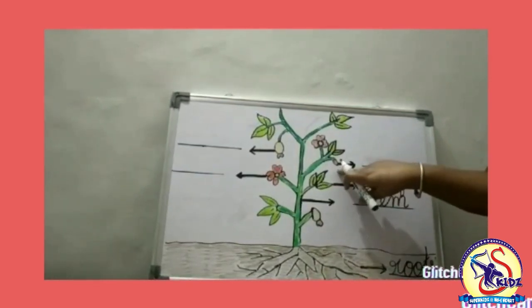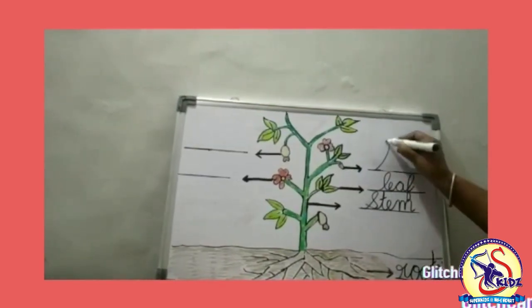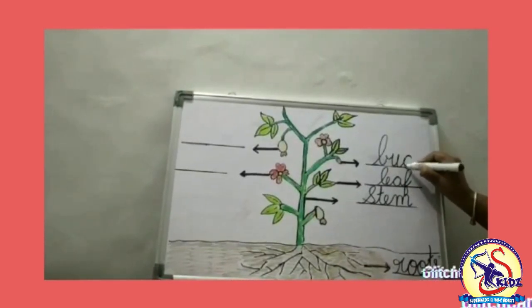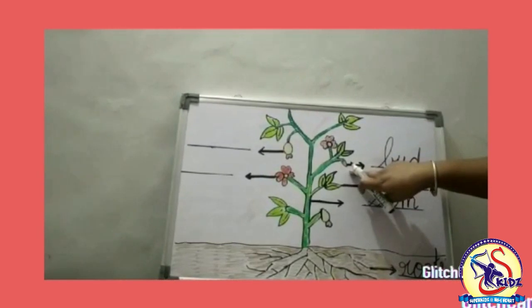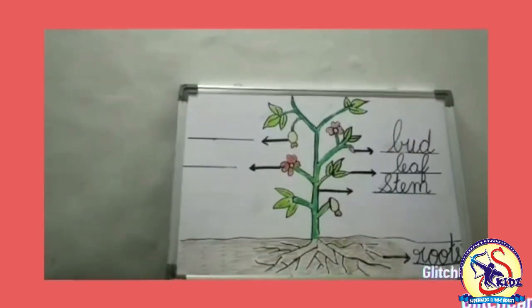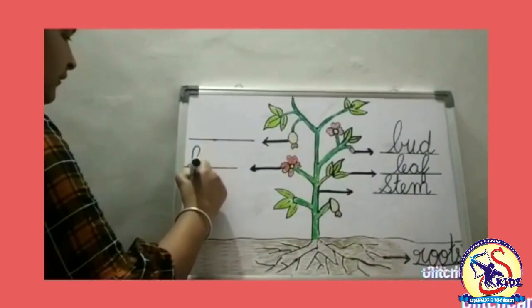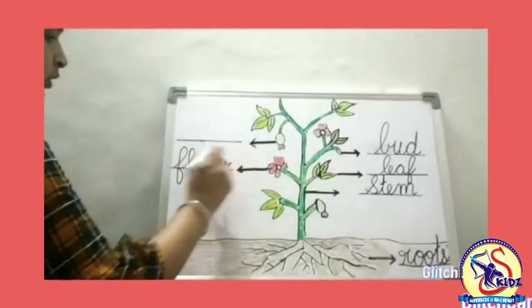Now see the next one. Yes, this is a bud. Spell bud: B-U-D. Bud is a baby plant. Now comes flower. Spell flower: F-L-O-W-E-R.